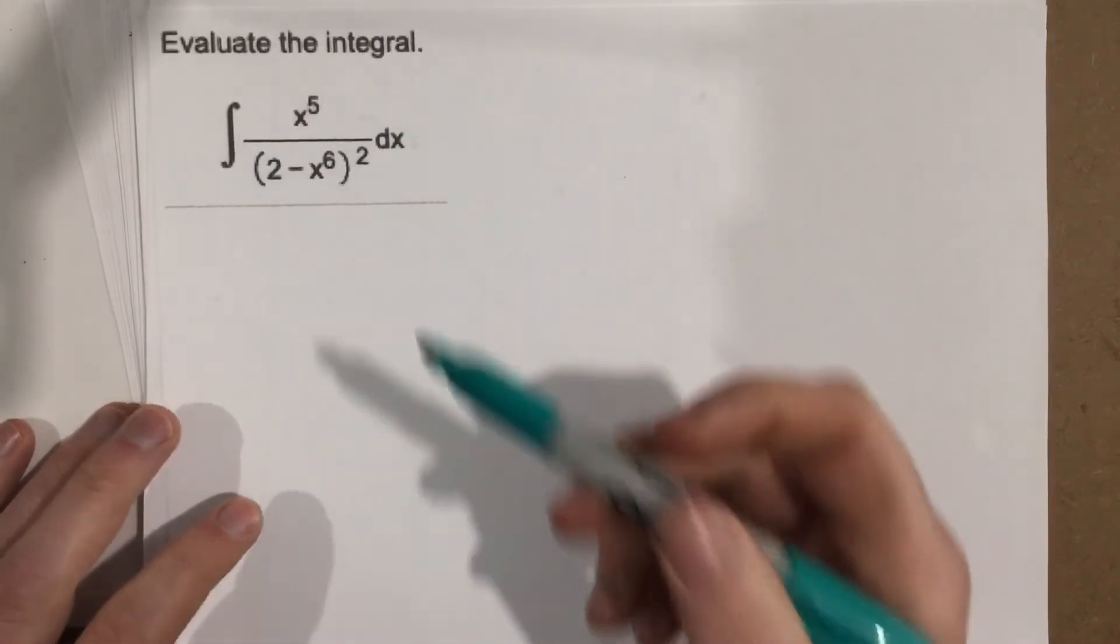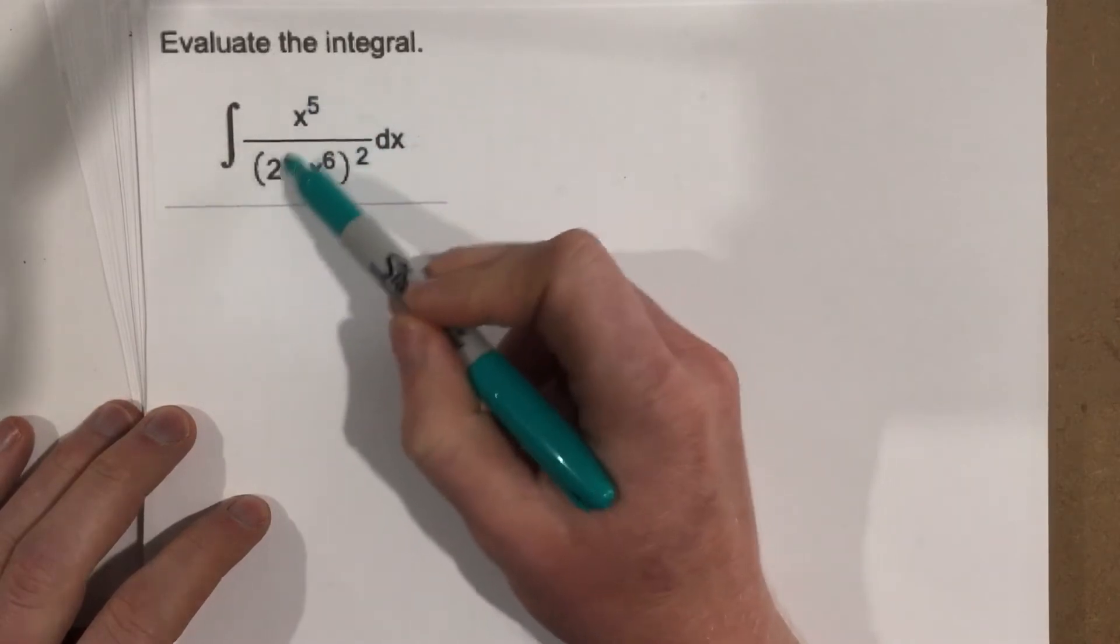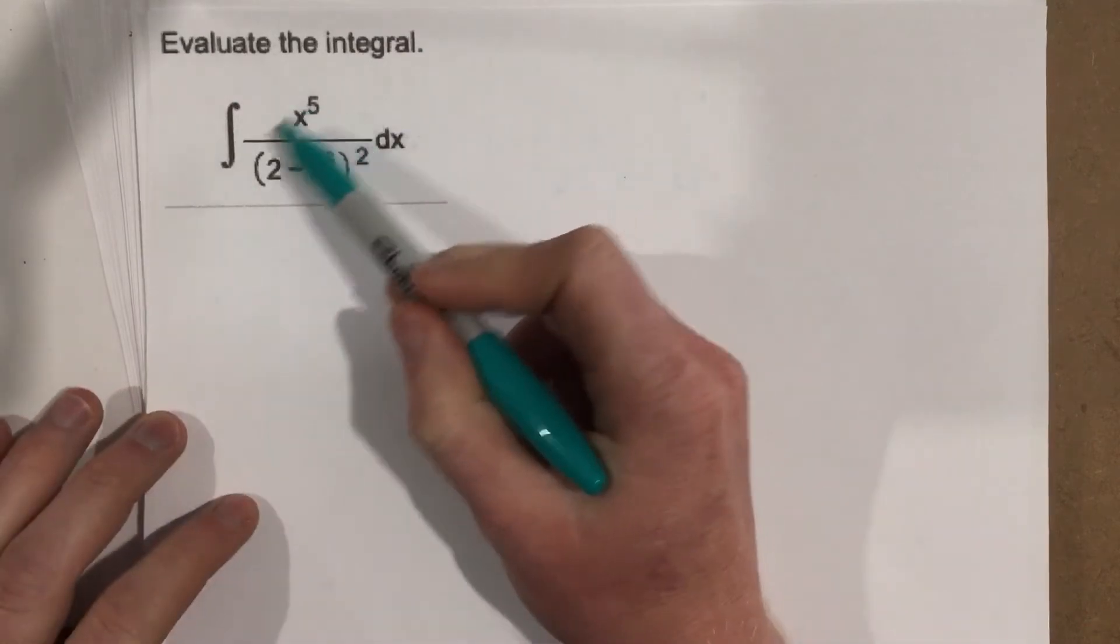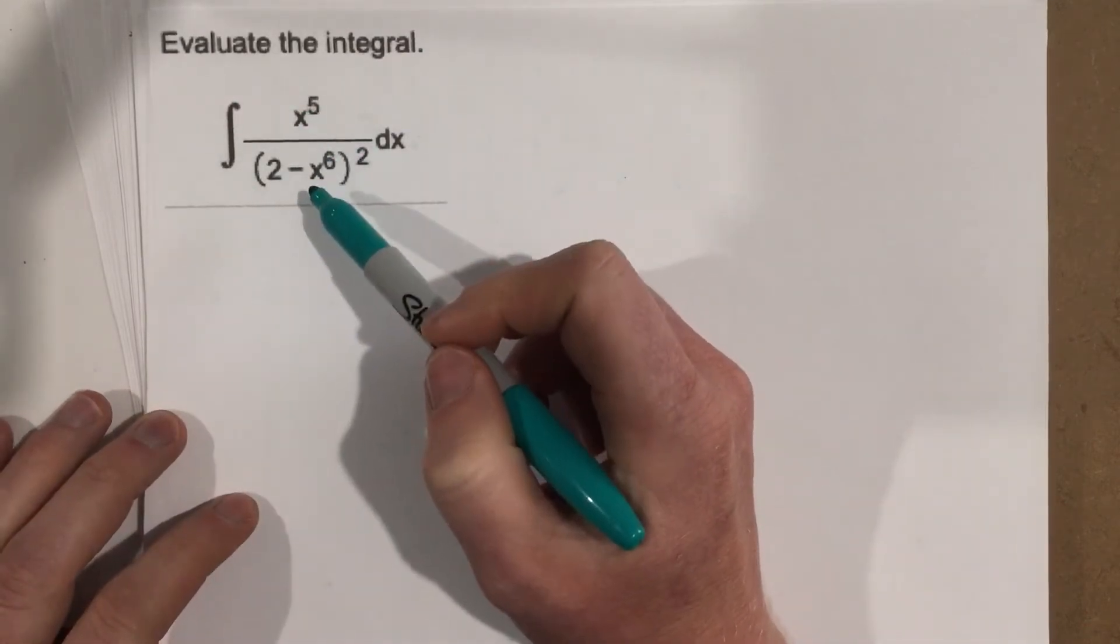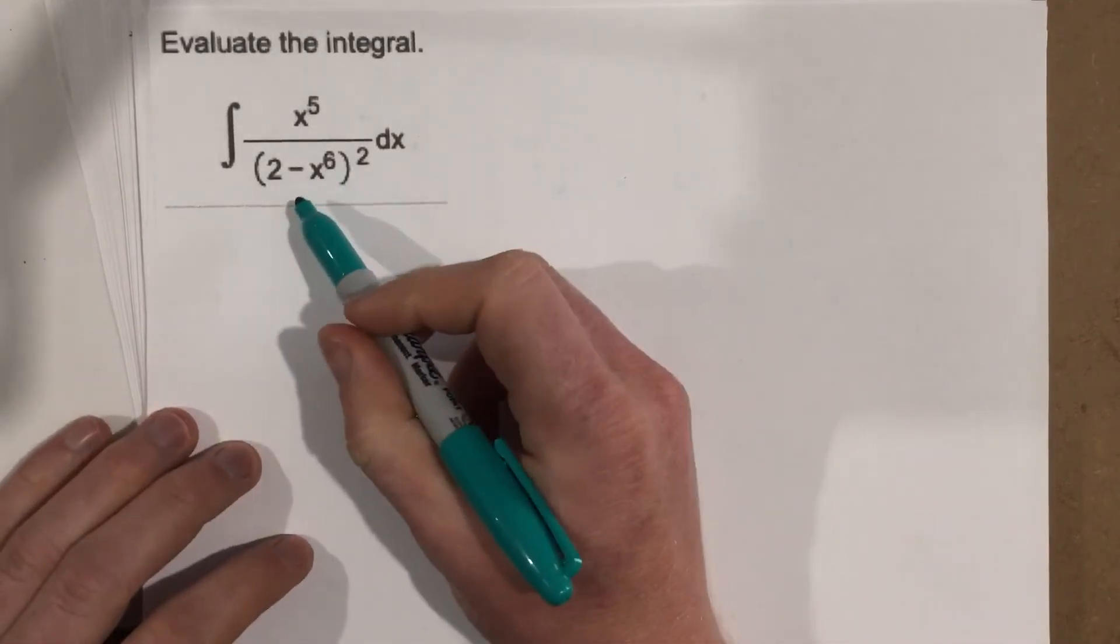We're going to use u-substitution, obviously, because we have a function on top and a function on the bottom. So we're going to need to—there's not a straight integral for this—so we need to get it in terms of u so that we can actually do the integration and then replace it. This one's pretty straightforward, actually.